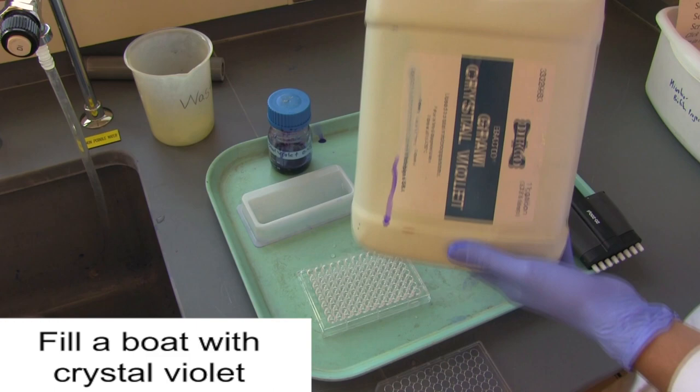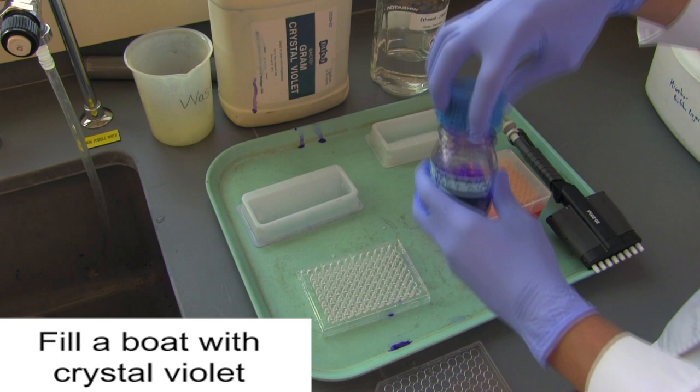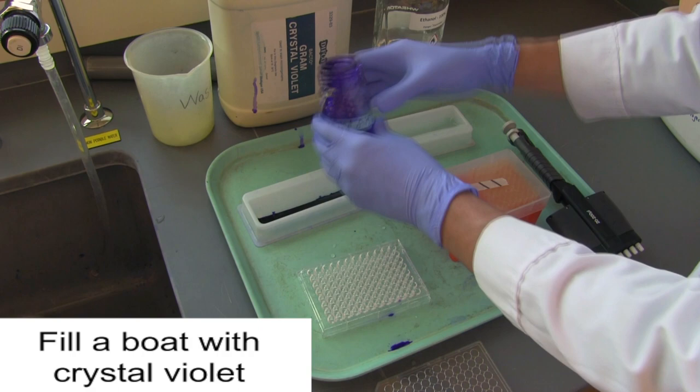Now, you'll fill one of the boats with crystal violet. This will be used to stain the cells in the biofilm.